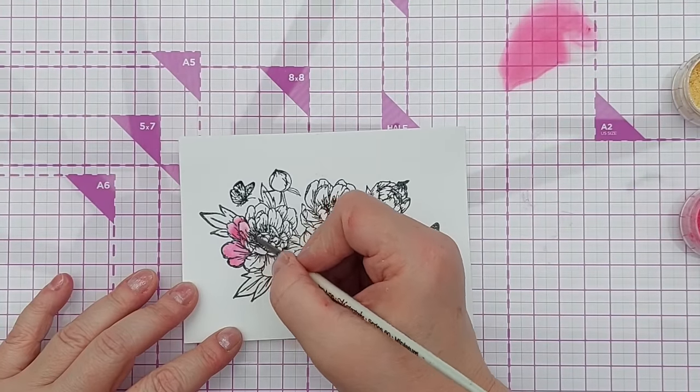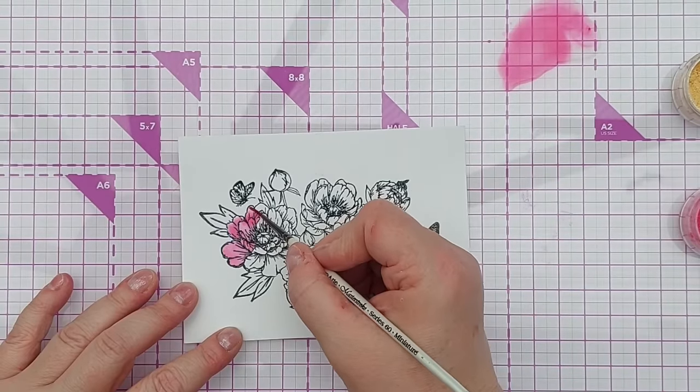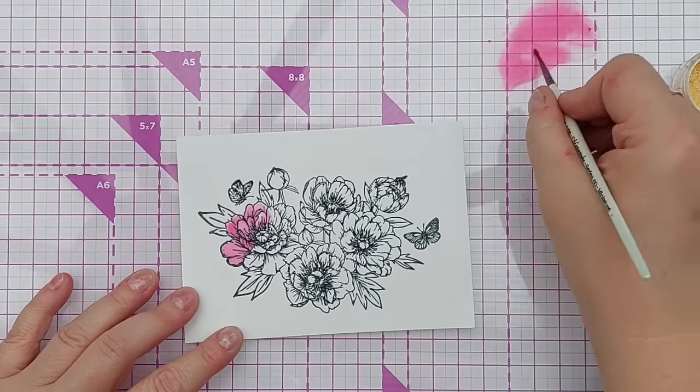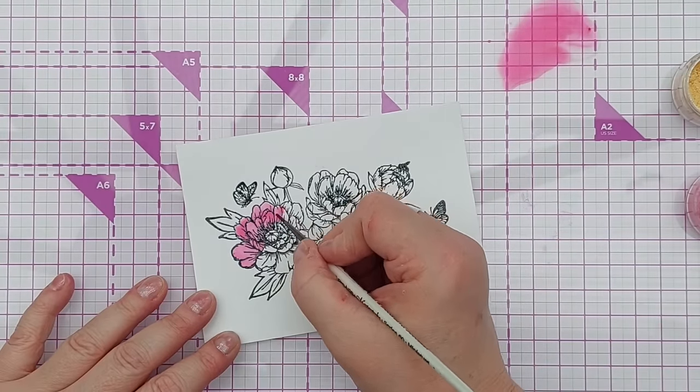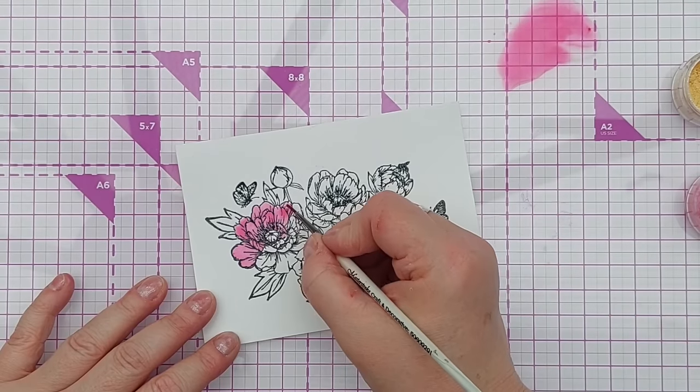And I can color in, I can paint my stamped image like you would with any wet media. You can use inks obviously, or watercolor, but this is a pigment powder video so we're using pigment powders to paint our stamped image.